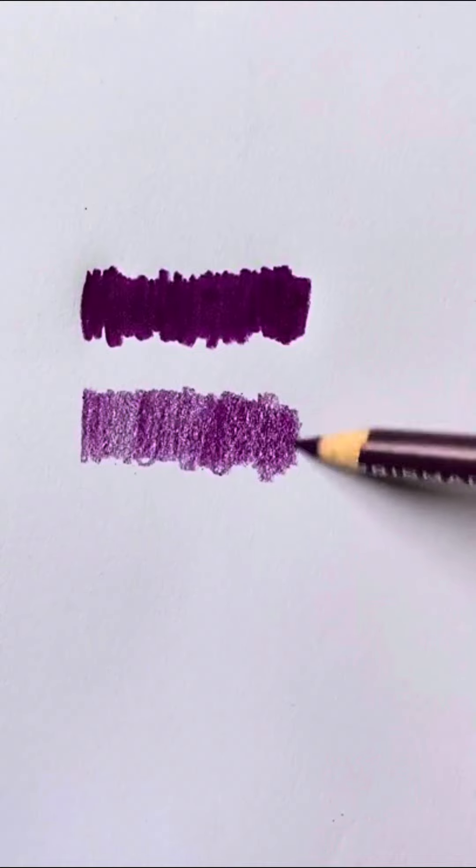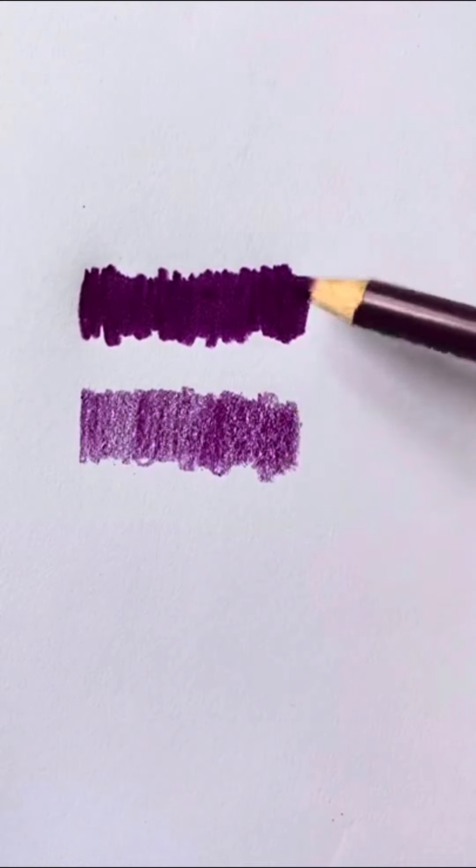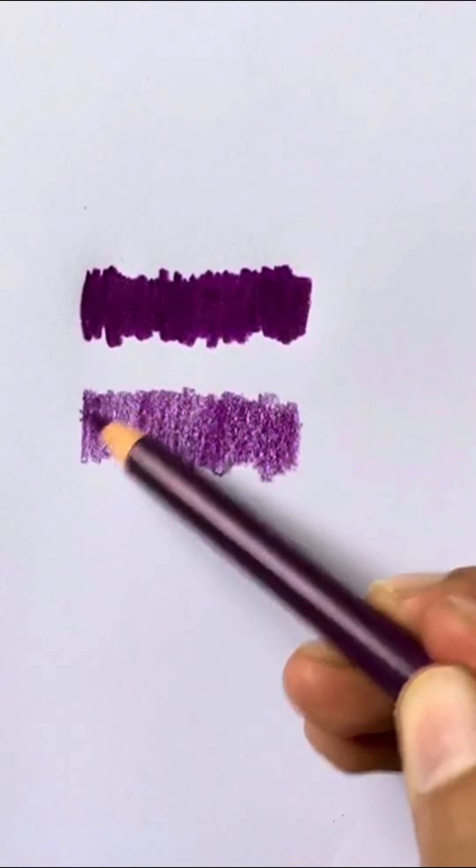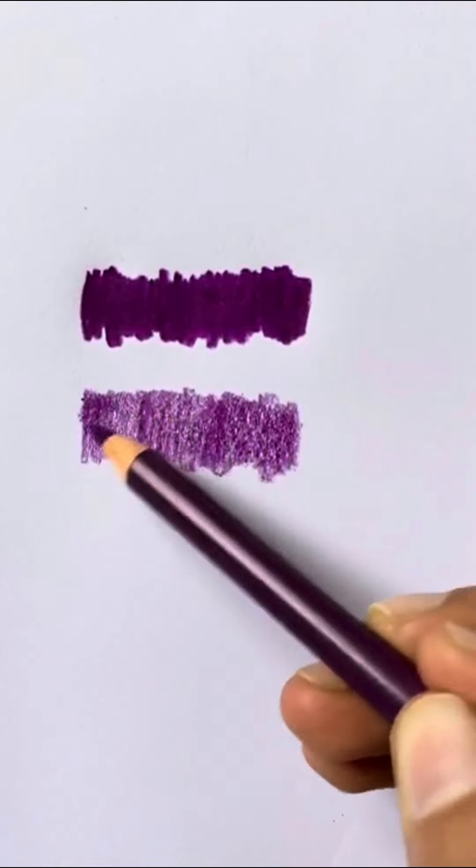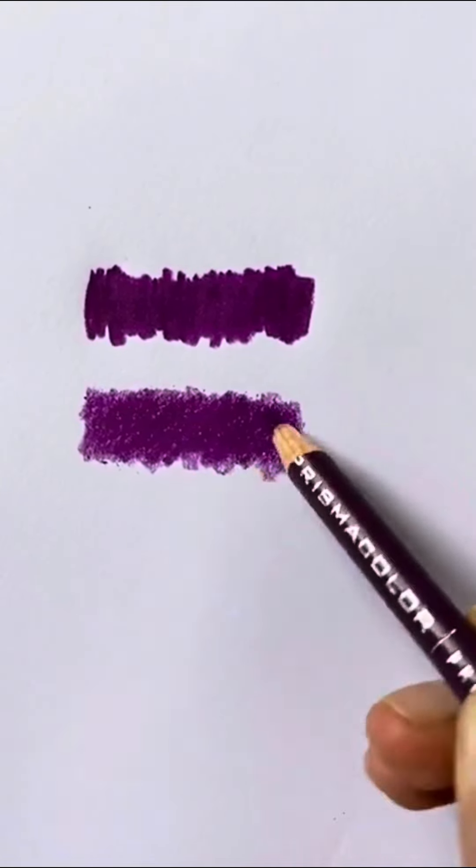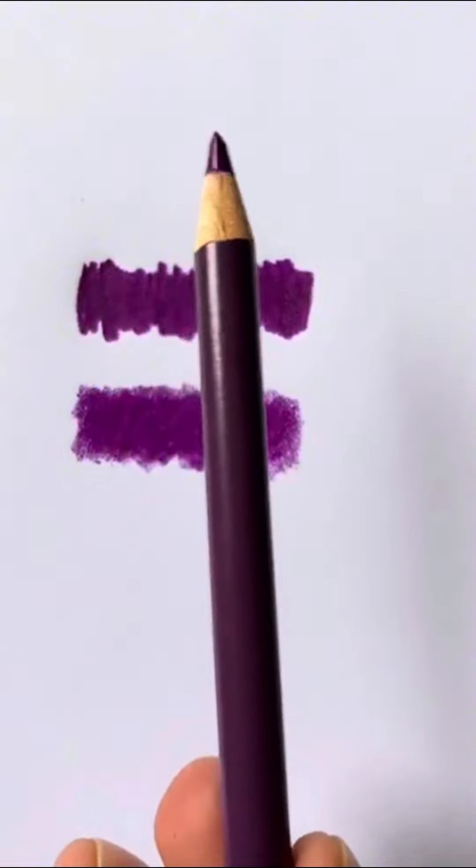Also since you're holding the pencil a little further back, the first shade might be lighter. So for that reason, make a second layer with diagonal strokes. And there you go! You haven't ruined your pencil and created your desired shade.